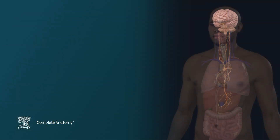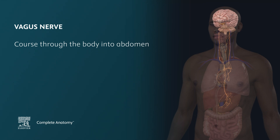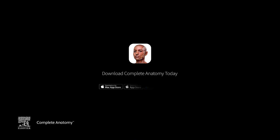Hopefully now you have a better understanding of the vagus nerve, including its course down through the body into the abdomen, as well as its motor, sensory, and parasympathetic functions. Be sure to check out Complete Anatomy to learn more.